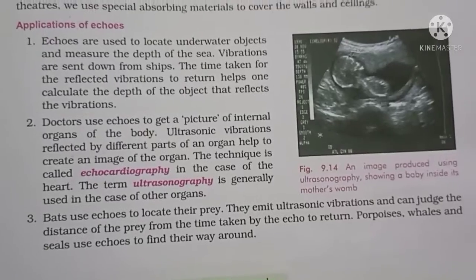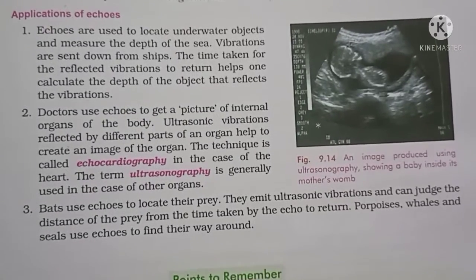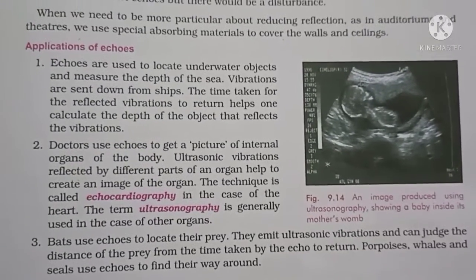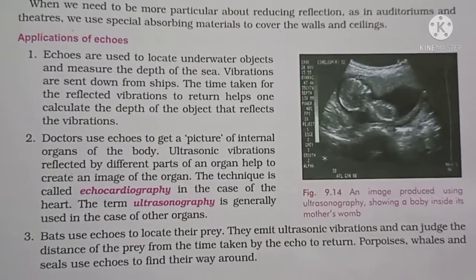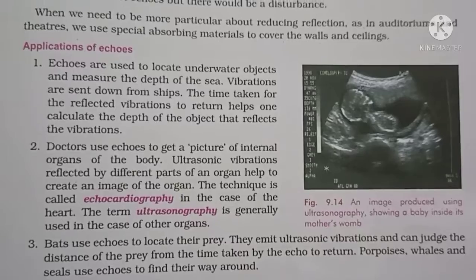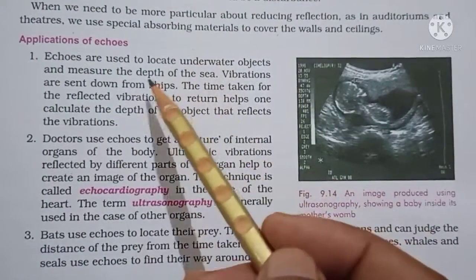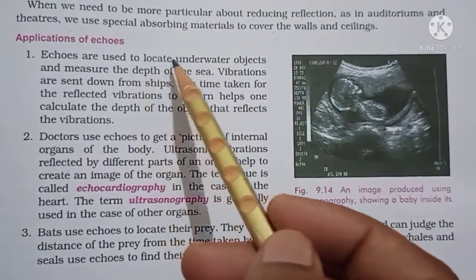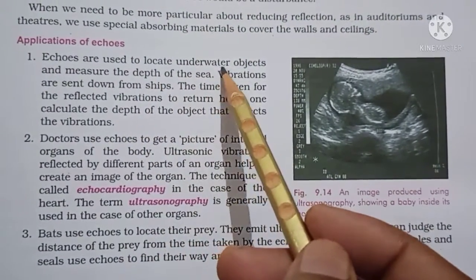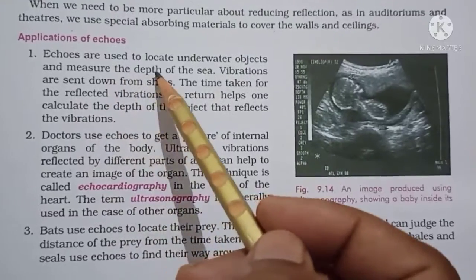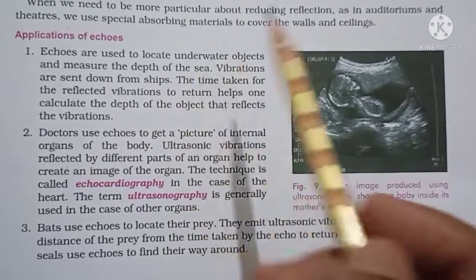The reflection of sound is used to locate underwater objects and measure the depth of the sea. A special device called SONAR — Sound Navigation And Ranging — is used. SONAR is used to find the depth of the sea or to locate underwater things like shoals of fish, shipwrecks, and enemy submarines.